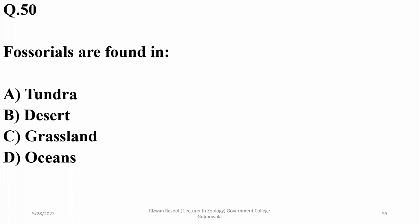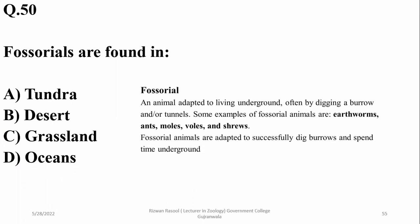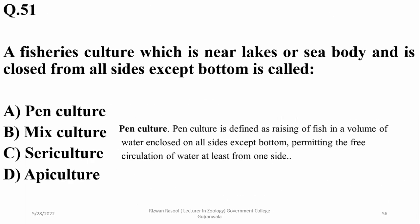Animals that normally burrow — such as ants, moles, and shrews — are mostly found on islands and are comparatively more common. Deserts also have burrowing animals. Fisheries culture which is near lakes or the sea — a structure closed from all sides except the bottom is called pen culture, as the definition indicates.